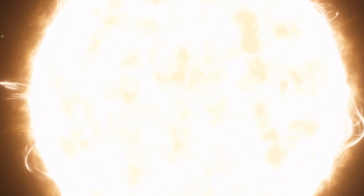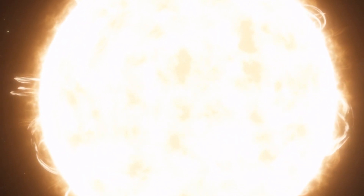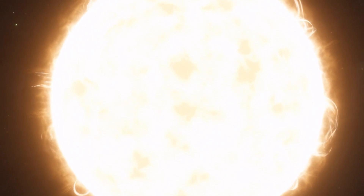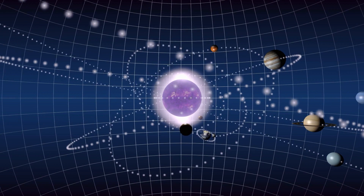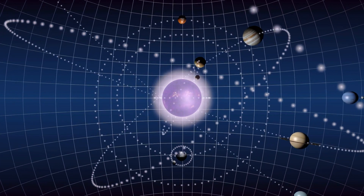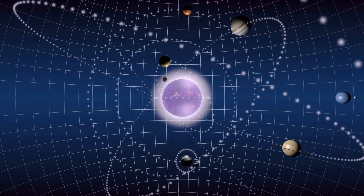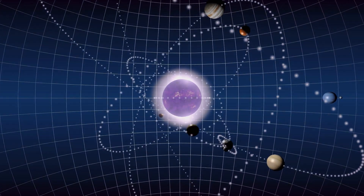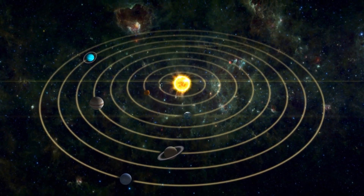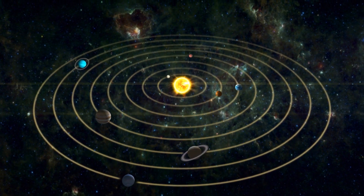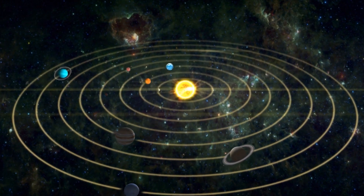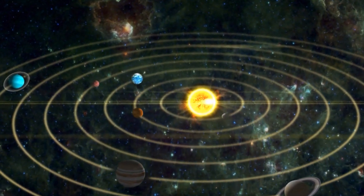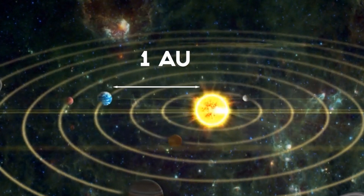However, our sun is a yellow dwarf star, and it is this fact that allowed life to develop on Earth. The habitable zone of our solar system is the region where the temperature is just right for liquid water to exist. This zone extends from 0.7 to 1.5 astronomical units from the sun, where one astronomical unit is the average distance between the Earth and the sun.